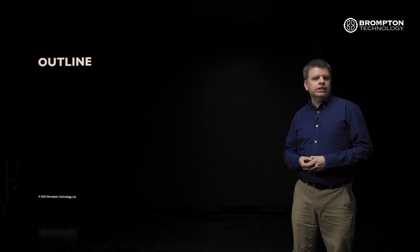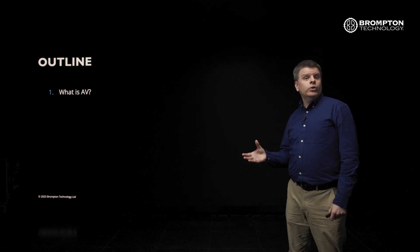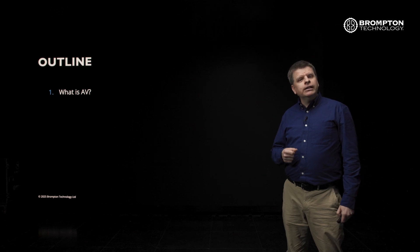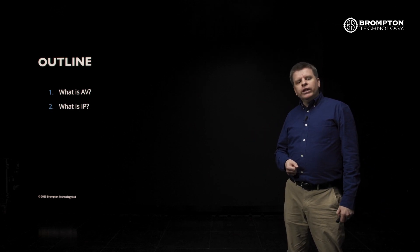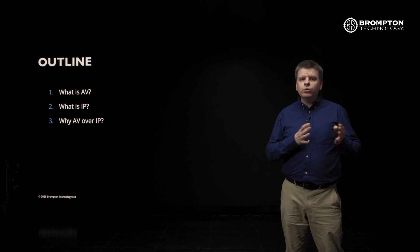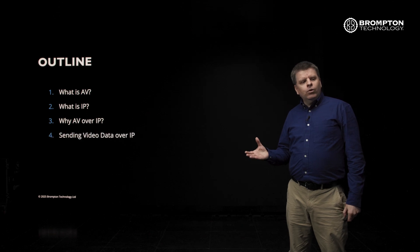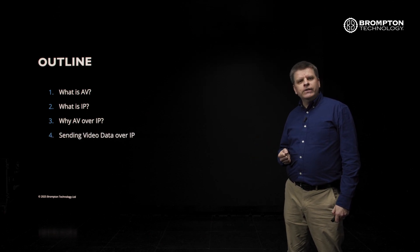In terms of how we've constructed this course, we've broken it up into 10 easy-to-consume bite-sized pieces. We're starting with what is AV, which might seem like a fairly basic question, but it is important we understand the constituent elements of AV over IP before we put them all together. Similarly, we're going to cover what is IP. We're then going to talk about why we want to combine AV and IP — the benefits, but also what we need to watch out for. We'll then start to talk about how we send video data over IP, getting into the practical elements of how it actually works under the hood, covering the basics so you have a clear understanding of how this is expected to work.